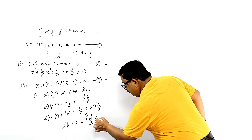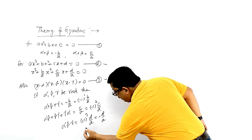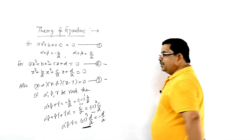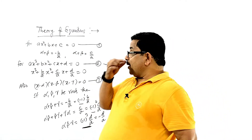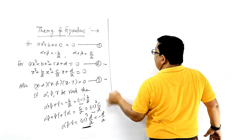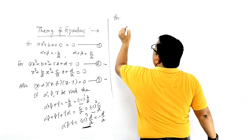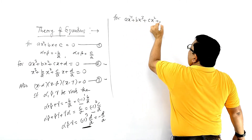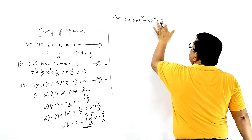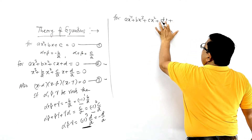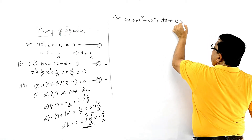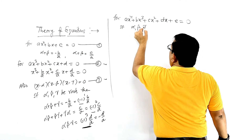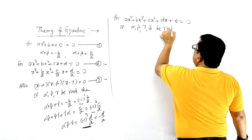Now for the bi-quadratic equation: ax⁴ + bx³ + cx² + dx + e = 0. If alpha, beta, gamma, delta are the four roots of this degree 4 equation, then we can establish similar relationships between the roots and the coefficients.